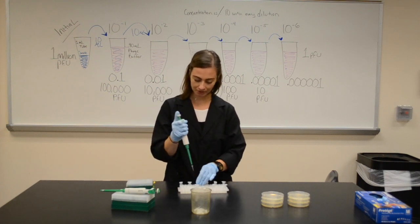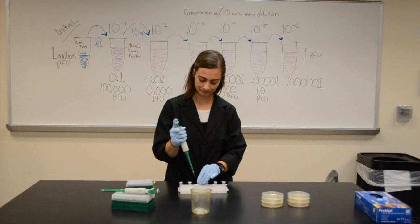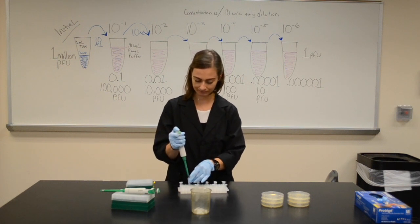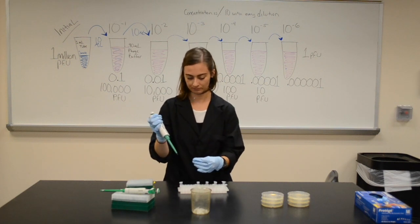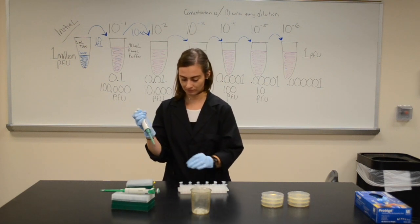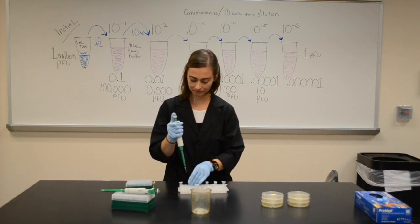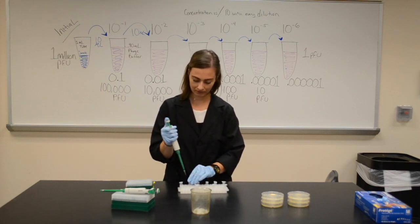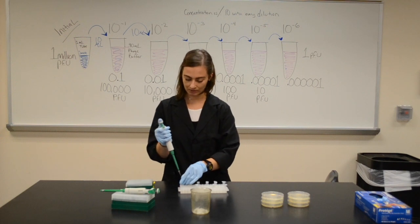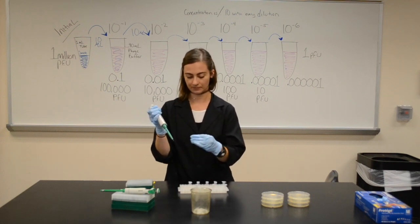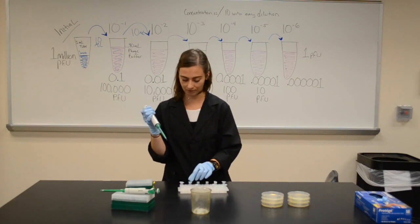Take 10 to the minus 4th into 10 to the minus 5th, and finally 5th into the minus 6th, which will be the smallest of the dilutions.